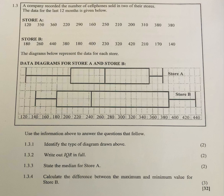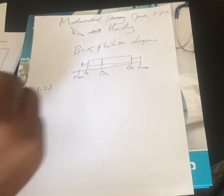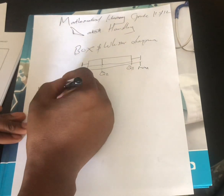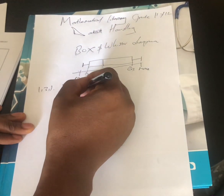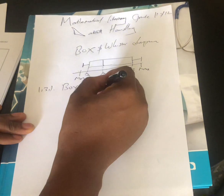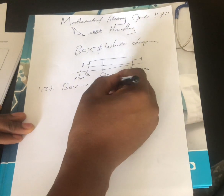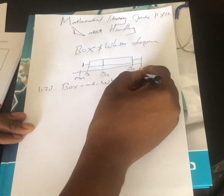Question 1.3.1 says: identify the type of diagram drawn above. We know the name of this diagram is a box and whisker diagram.